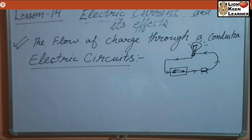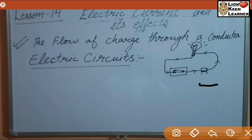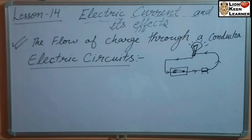Isme ek switch hai, doosra cell hai jisme positive terminal aur negative terminal hain, aur ek bulb hai. Jab bhi switch on hota hai, means circuit complete hota hai, to cell ki positive terminal se negative terminal ki taraf hamaara current flow hota hai.